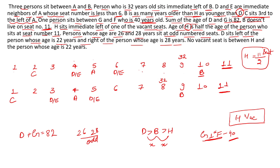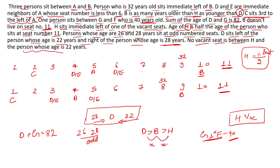'D sits to the left of the person whose age is 22 years, and to the right of the person whose age is 28 years.' So the order is: 28 … D … 22. Note: this is not 'immediate' left/right. Finally: 'No vacant seat is between H and the person whose age is 22 years.' With all clues noted, let's now solve.